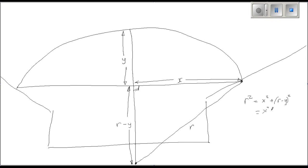So let's expand this: R squared equals X squared plus R squared minus 2RY plus Y squared.